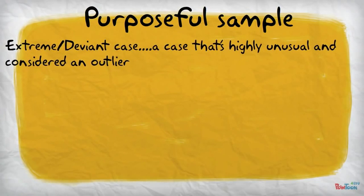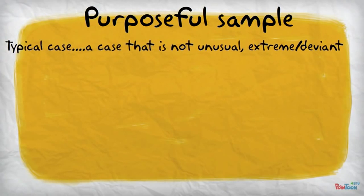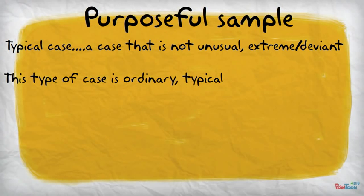The extreme deviant case is a case that's highly unusual and considered an outlier. Researchers — more for case study — find a case that would be unusual or an outlier, and this can help give variation to the study being conducted. On the other hand, there's the typical case, which is a sample of a case that's not in any way extreme or deviant — your typical, usual type of case. Whether to use an extreme deviant case or a typical case is up to the researcher, depending on which would best answer the research question.